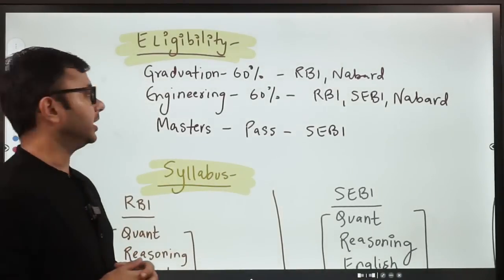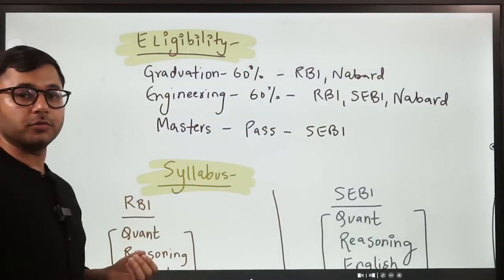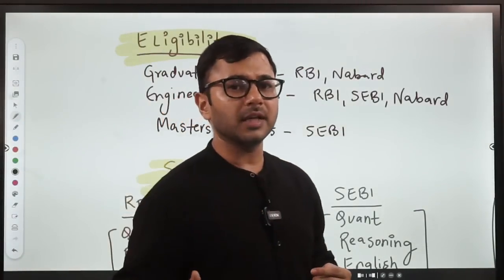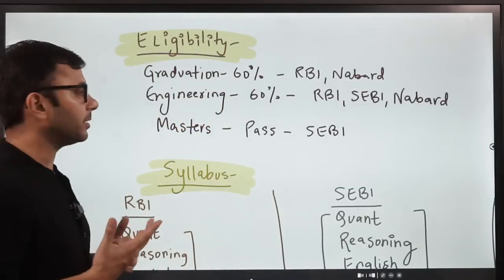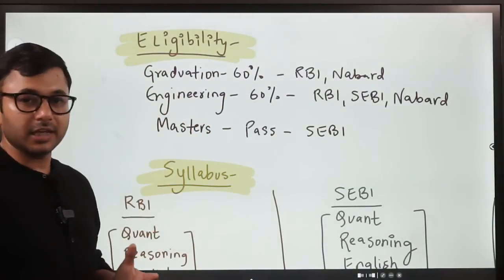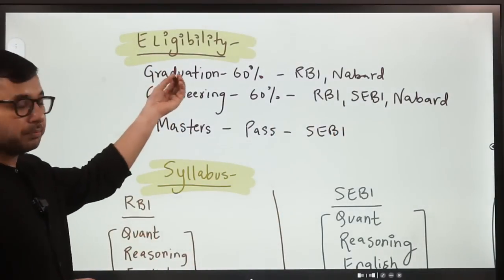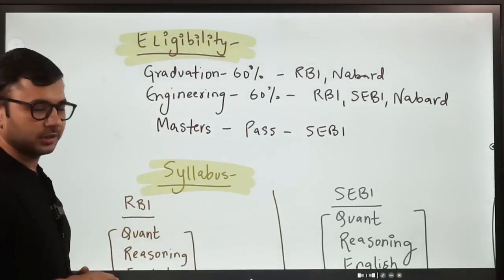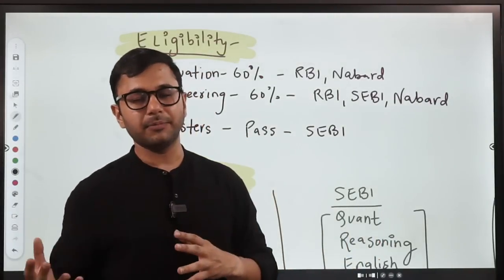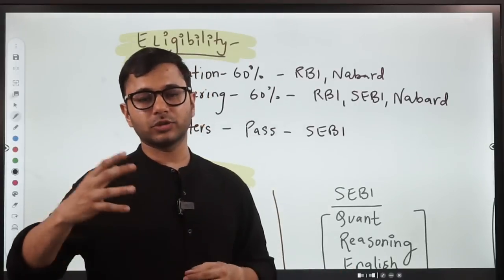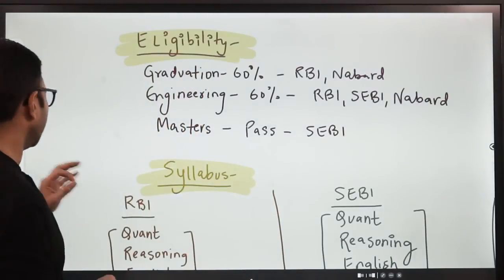Under that, we go to eligibility. Graduation 60% for RBI and NABARD, which is a little higher for a lot of students. But you are already in a commanding position, because a lot of applicants are below this and eliminate them. If you have done engineering, then also 60% for all the three exams, RBI, SEBI and NABARD. But if you are a simple graduate, then if you have to write SEBI exam, you will have to do a master's with no percentage requirement. For example, if you have done BCOM, then you have to do MCOM or MBA, BBA, then you have to do MCOM or MBA, or anything else which has a master's degree tag. This is about eligibility.